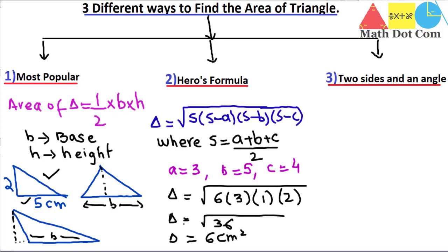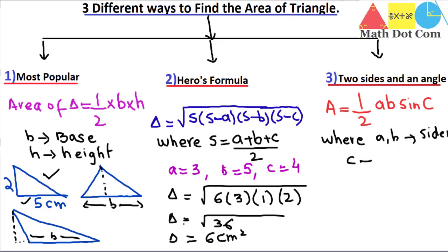One more method to find the area of a triangle is when you are given two sides and an included angle. The formula is: area = 1/2 · a · b · sin(C), where a and b are two sides of the triangle and C is the angle between those two sides. You can use this method whenever you are given two sides and the included angle.